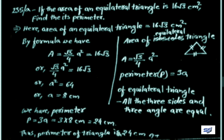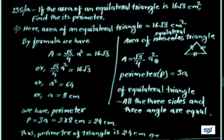The perimeter formula is P = 3a. Since a = 8 cm, P = 3 × 8 = 24 cm. Therefore the perimeter of the triangle is 24 cm. To summarize: using the area formula A = (√3/4)a² we found a = 8 cm, and using the perimeter formula P = 3a we obtained the perimeter of 24 cm. In an equilateral triangle all 3 sides and 3 angles are equal.